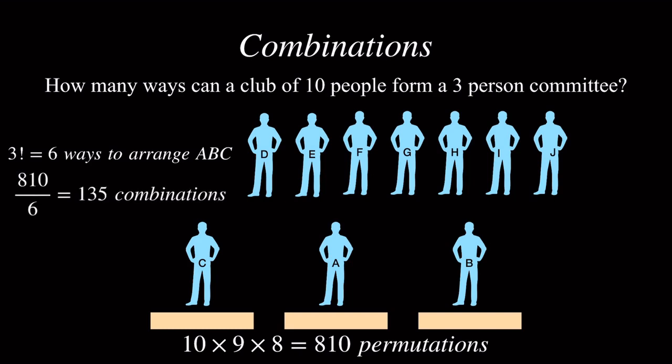So for every 3 chosen people, there are 6 different orders. Thus, dividing everything by 6 will get rid of the over-counts. So the number of possible committees is 810 over 6, which is 135.